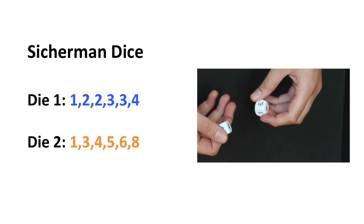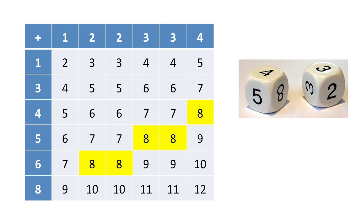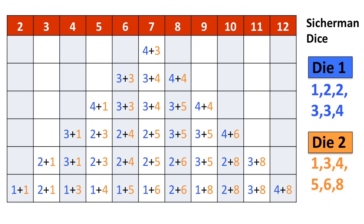If we look, for example, for a sum of 8, we find 5 possibilities, just like with the regular dice. This table shows that we have the same distribution for every number like before.